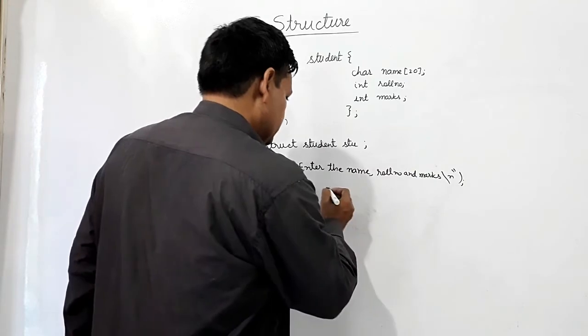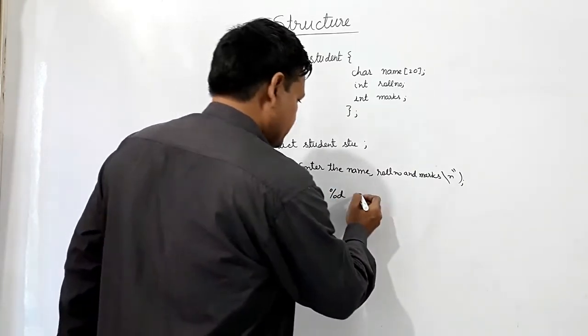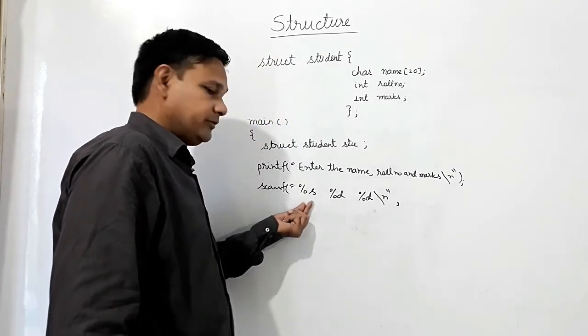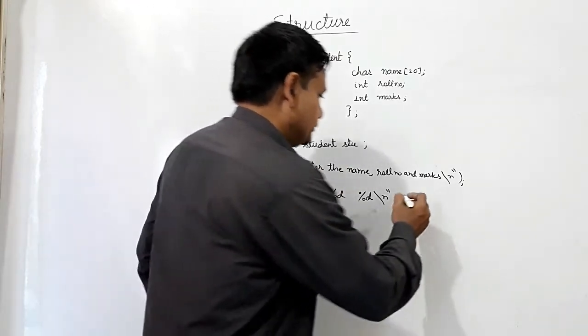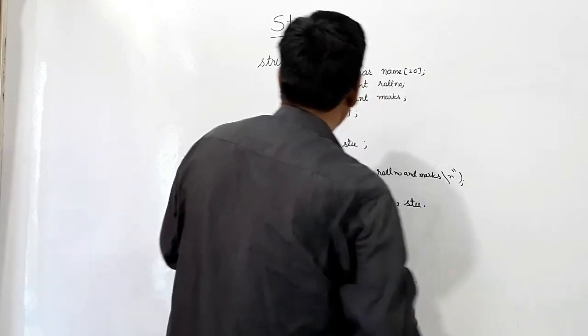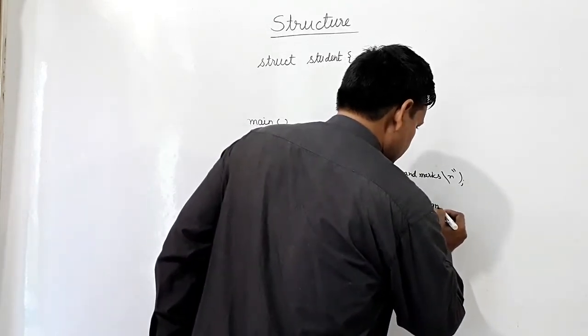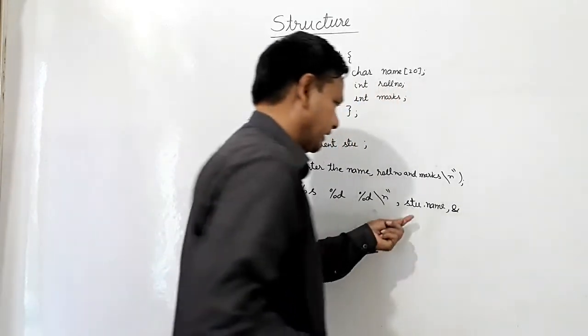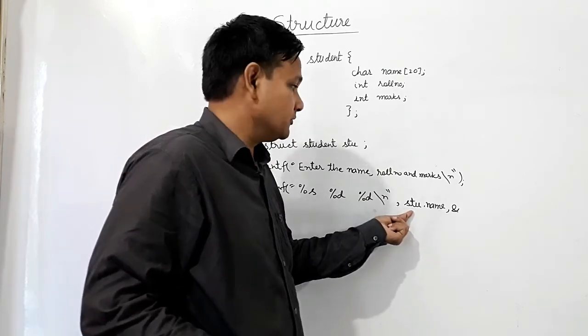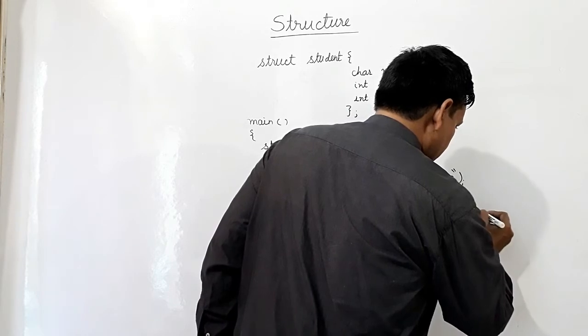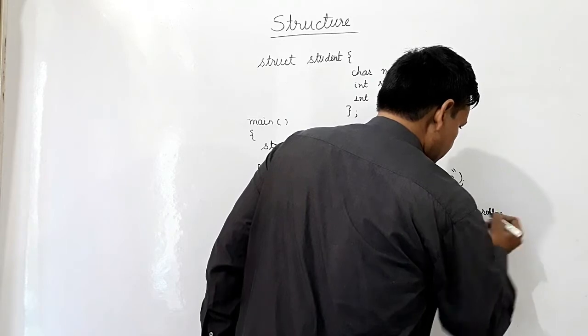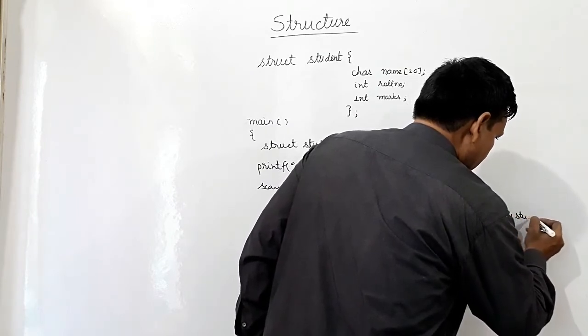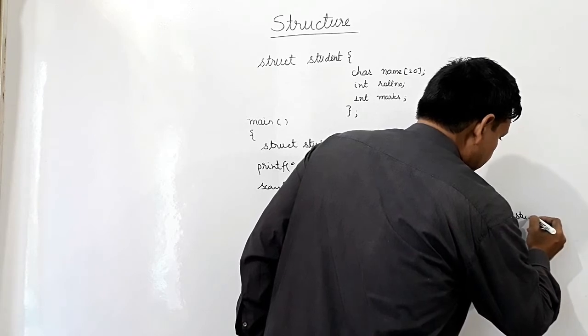Okay, then role number, then marks. Format specifier percentage. It means stu.name, stu.role number. Here we are not using ampersand because this is string. Okay? Ampersand stu dot role number. Here, marks.